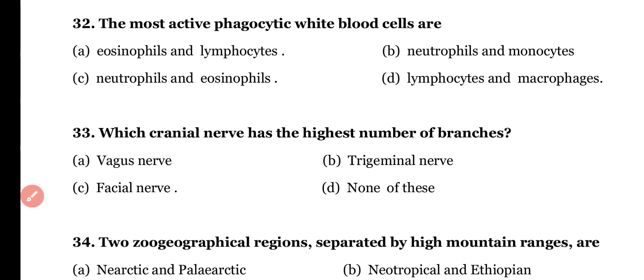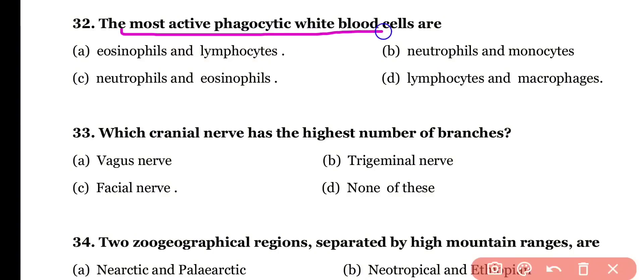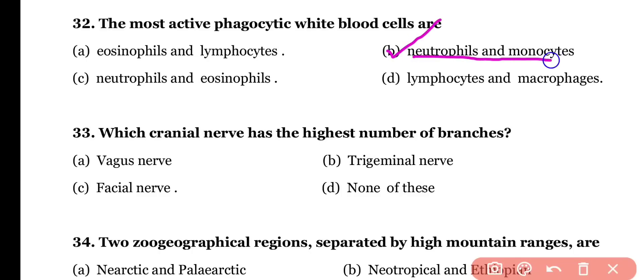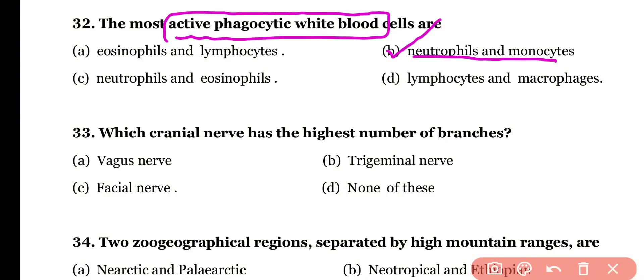Question number thirty-two: the most active phagocytic white blood cells are (a) eosinophils and lymphocytes, (b) neutrophils and monocytes, (c) neutrophils and eosinophils, or (d) lymphocytes and macrophages. The correct answer is option B — neutrophils as well as monocytes are the most active phagocytic white blood cells.